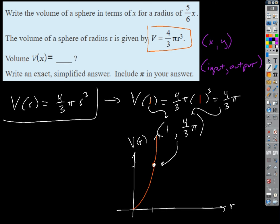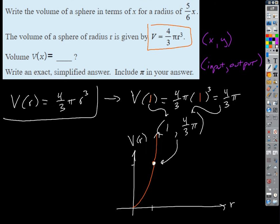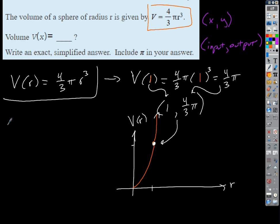Let's go back. So we evaluated the function at 1. Now this might sound weird, but let's evaluate the function at A. What's A? Some number — we didn't specify. If I evaluate this function at A, what do I get back for an answer? 4/3 π A cubed. We never specified what A is, but whatever A is, in terms of A, that's what the output's going to be.